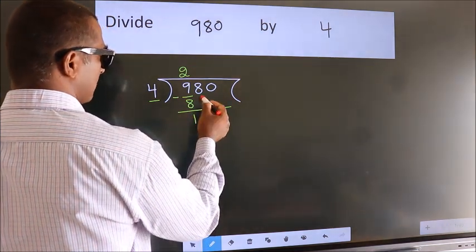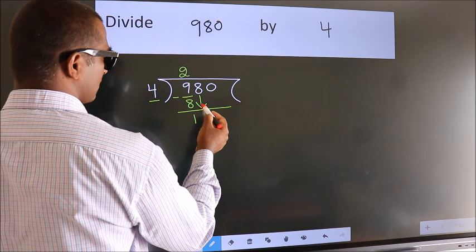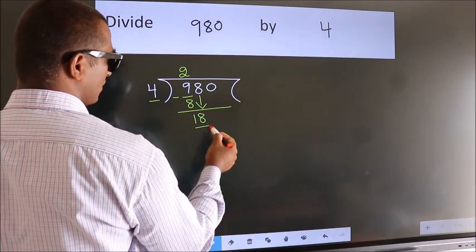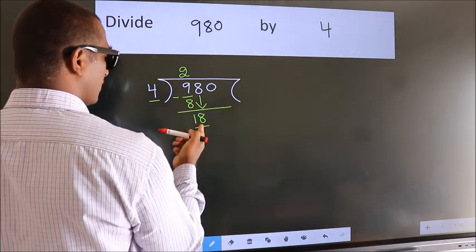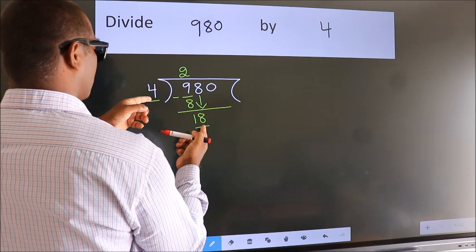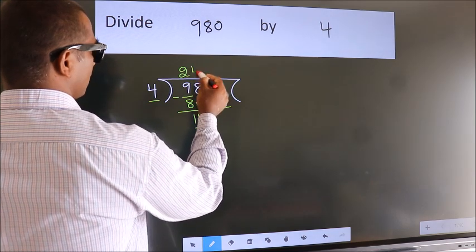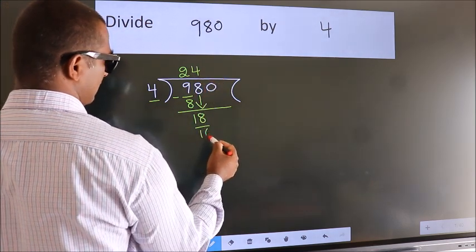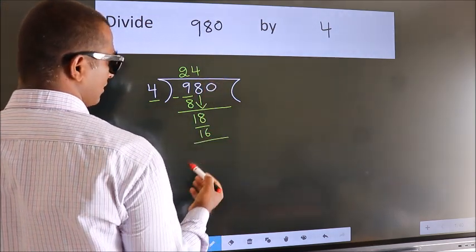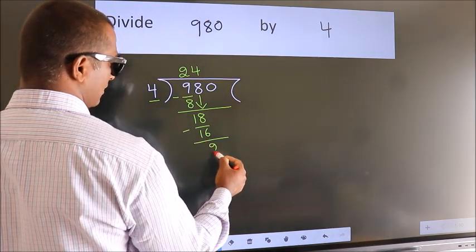After this, bring down the beside number. So 8 down. So 18. A number close to 18 in 4 table is 4 fours 16. Now we subtract. We get 2.